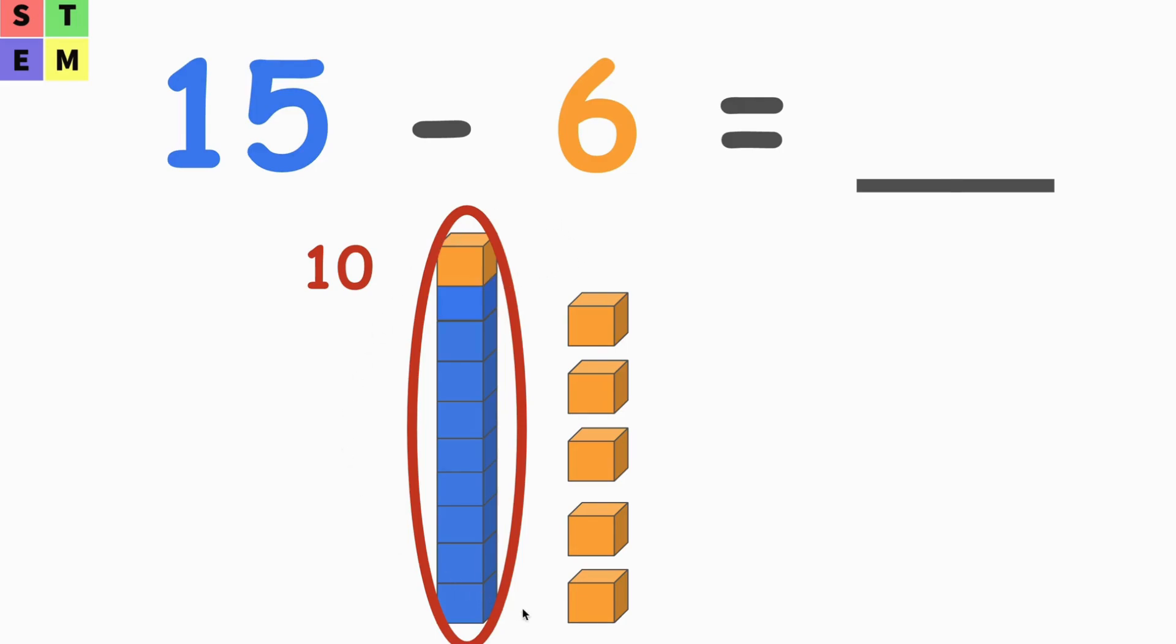We already know that in total we got 15. So once we minus the five orange blocks here, what do we have left? We do have 10 blocks left. So from the 10 blocks, we still got an additional one—it's marked orange.